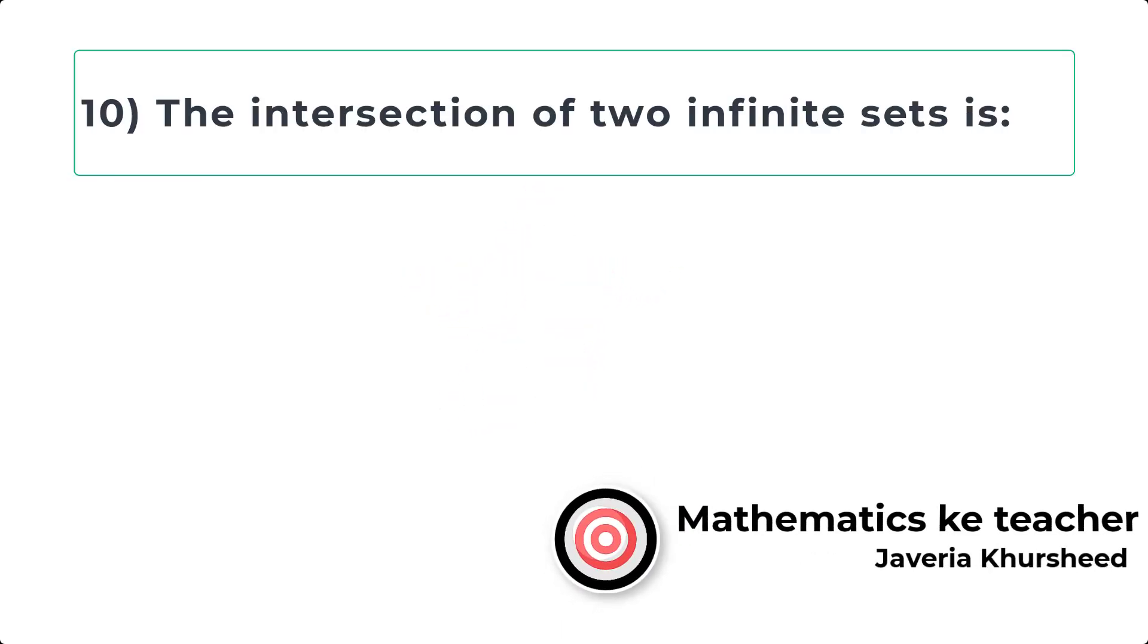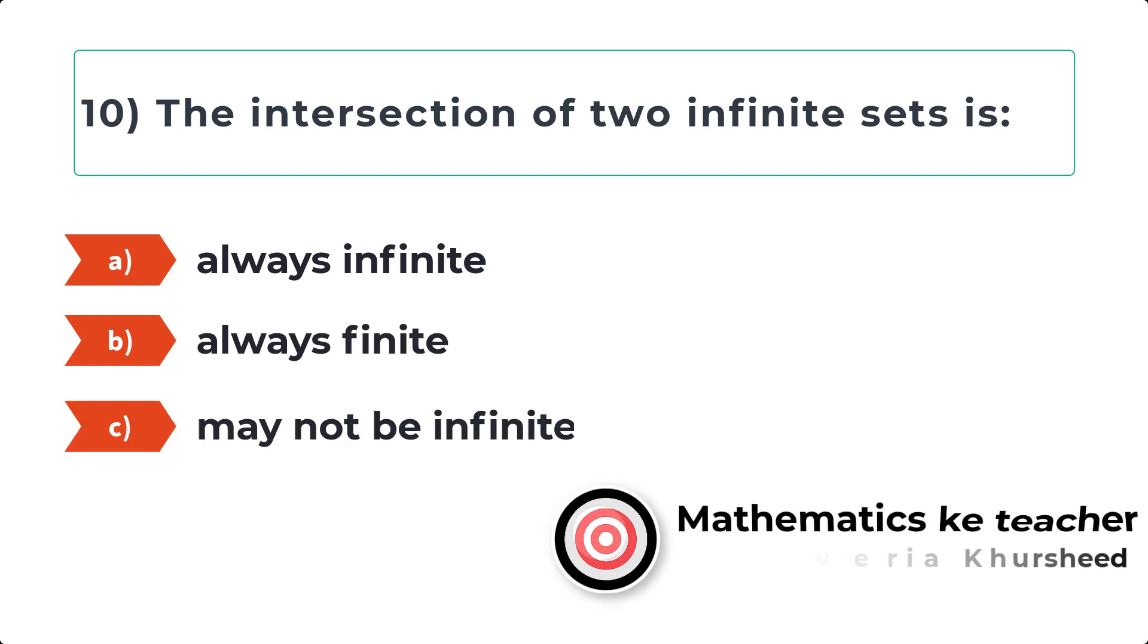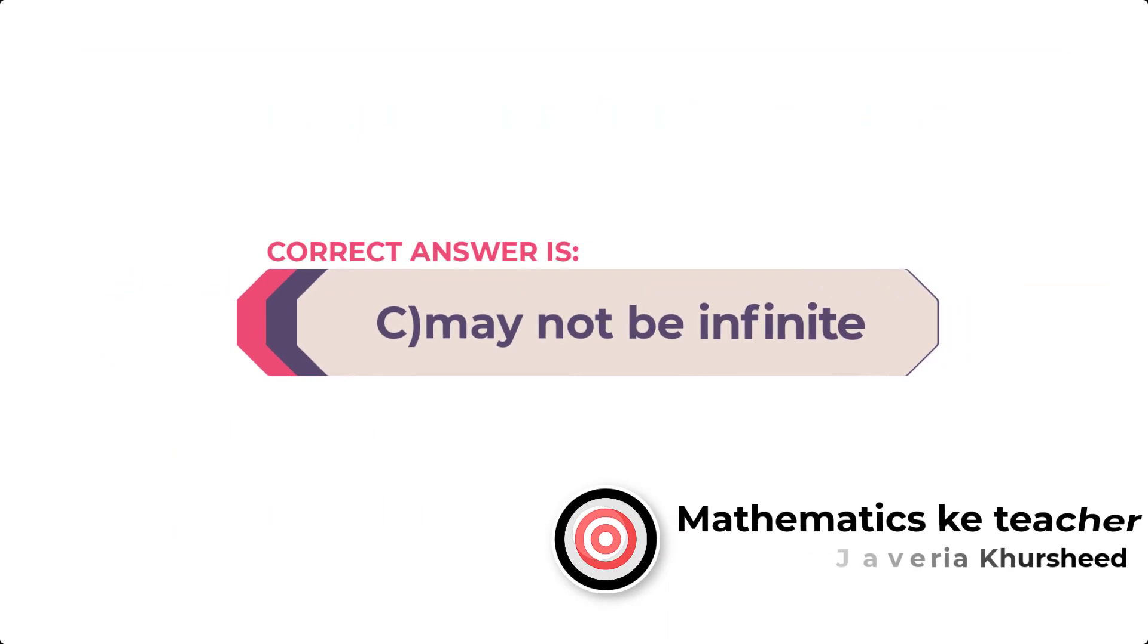Question 10: The intersection of two infinite sets is: A) Always infinite, B) Always finite, C) May not be infinite, D) None of these. Correct answer is C, may not be infinite.